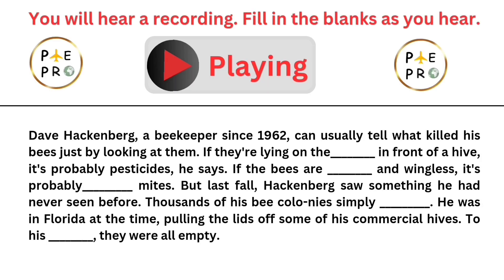Dave Hackenberg, a beekeeper since 1962, can usually tell what killed his bees just by looking at them. If they're lying on the ground in front of a hive, it's probably pesticides, he says. If the bees are deformed and wingless, it's probably vampire mites.